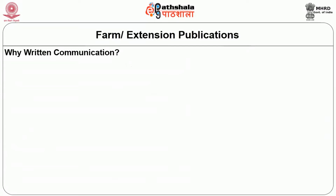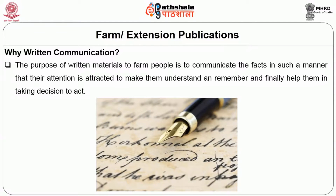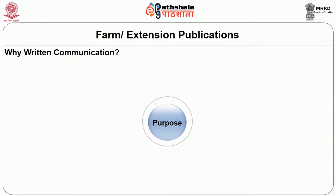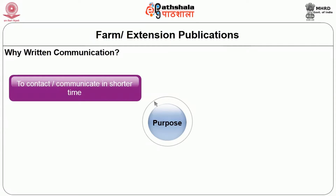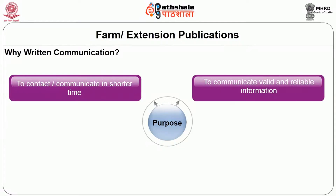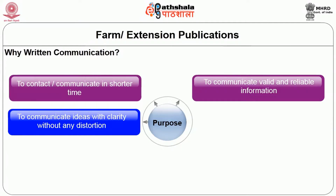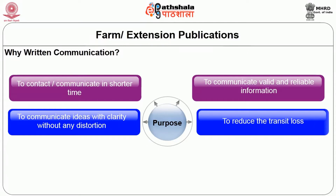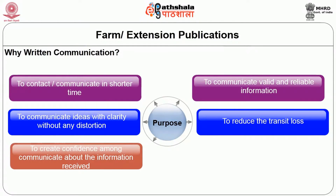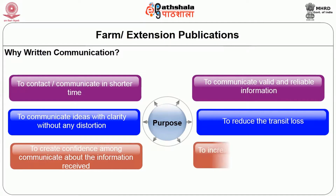The purpose of written materials for farm people is to communicate facts in such a manner that attention is attracted, understanding and retention are achieved, and people are helped in taking decisions to act. The purposes of extension publications are: to communicate in a shorter time; to communicate valid and reliable information; to communicate ideas with clarity without distortion; to reduce transit loss; to create confidence among communicators about the information received; and to increase the credibility of the source of information.